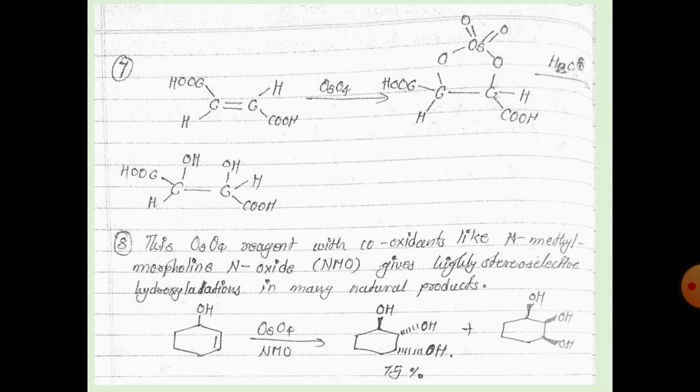OSO4 with co-oxidants like N-methyl morpholine N-oxide gives highly stereoselective hydroxylation useful in the synthesis of many natural products. OSO4 can be used catalytically; for example, with a double bond present, OSO4 performs hydroxylation.